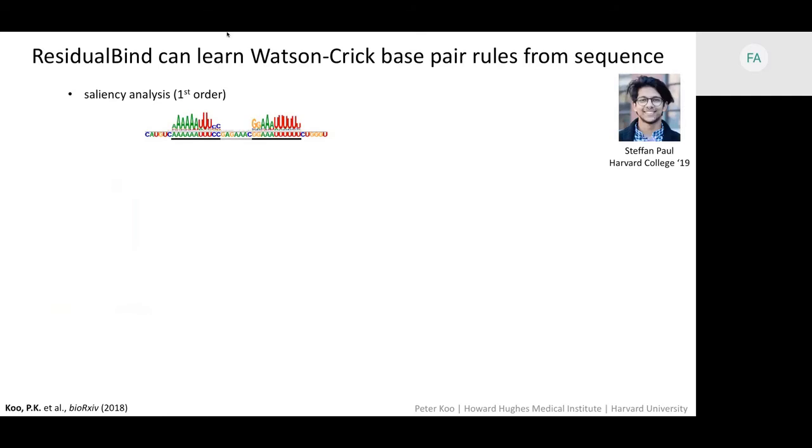So with the help of Stephan Paul, an undergraduate researcher at Harvard, we developed a method called second order in silico mutagenesis. The basic idea is that for a given sequence, we're going to take two positions and generate all possible pairwise mutations for those two positions and send those through the neural network and get out the predictions. And we can organize those predictions as this four by four matrix for positions one and two.